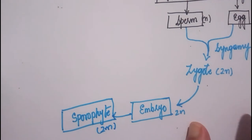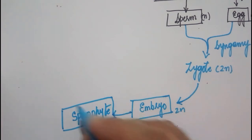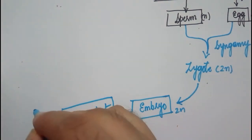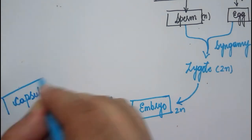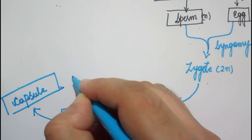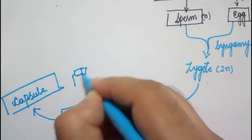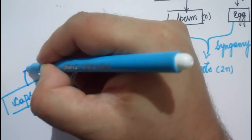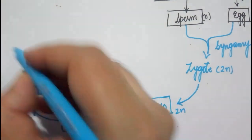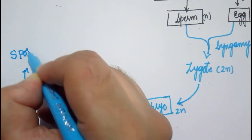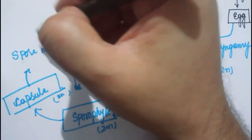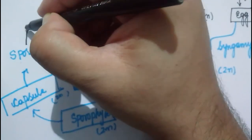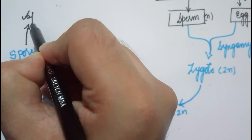An important thing to remember in bryophytes is that the sporophyte is dependent on the gametophyte. On the sporophyte there is a structure called the capsule. Inside the capsule, which is also diploid, there are spore mother cells. These spore mother cells undergo meiotic division and result in the formation of haploid spores.